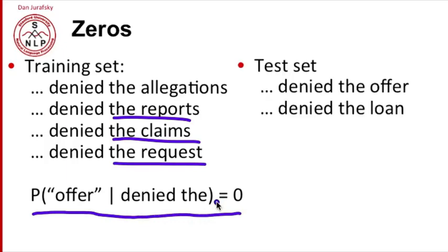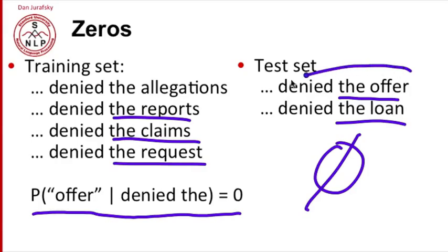Now we go to a test set and we see there's a sentence denied the offer and denied the loan. What's the probability of those sequences denied the offer and denied the loan going to be? Well, the probability is going to be zero because we've trained our probabilities on our training set. We're going to do a very bad job. If we're a speech recognizer, we'll never recognize this phrase. If we're a machine translator, we'll refuse to translate into this phrase. We're going to claim this phrase is just not good English. So this is a big problem we need to solve.